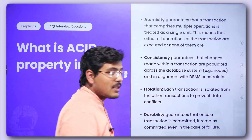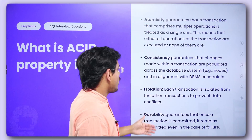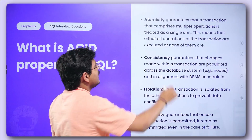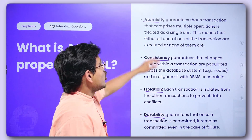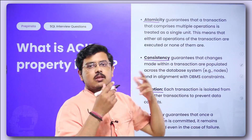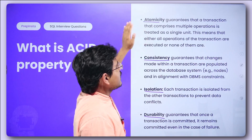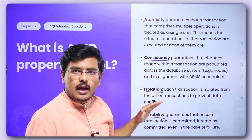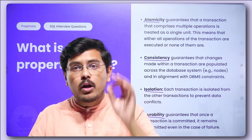Next: what is ACID property in SQL? ACID is an acronym where A stands for atomicity, C for consistency, I for isolation, and D for durability. Atomicity guarantees that a transaction comprising multiple operations is treated as a single unit — either all operations are executed or none of them are executed. If there are five operations in a transaction, either all five will execute or none will.